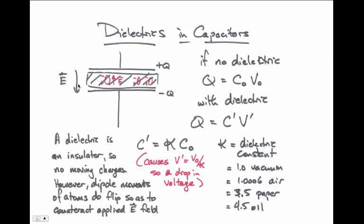If there's no dielectric, then the charge will equal some original capacitance times the original voltage. But with the dielectric, the voltage will drop to some new value V prime, and the capacitance will have to increase to some new value C prime, such that the product of C prime V prime equals C naught V naught. And that's why C prime has to go up in order for voltage to go down.